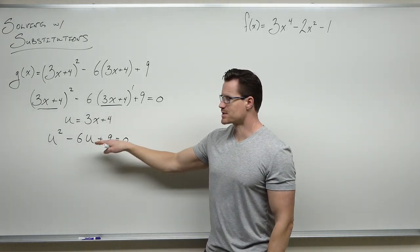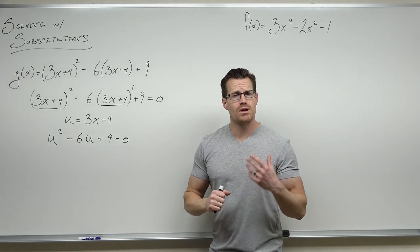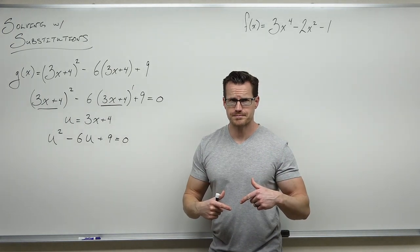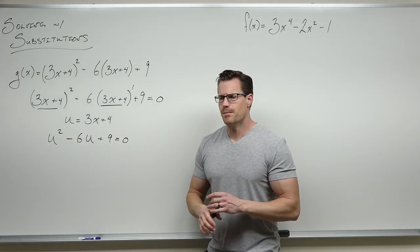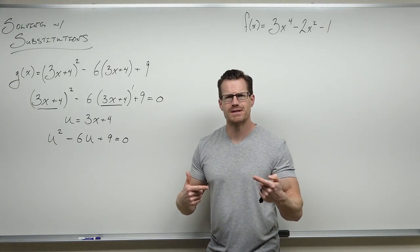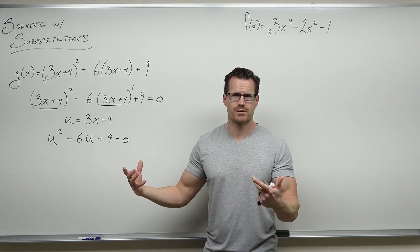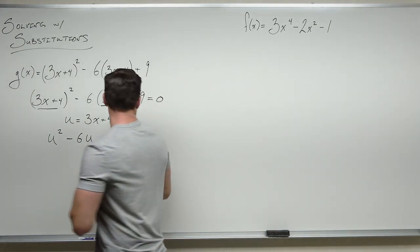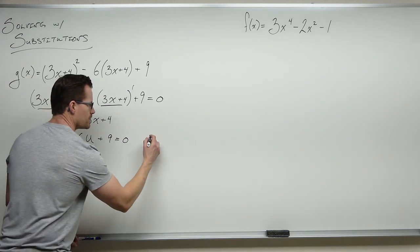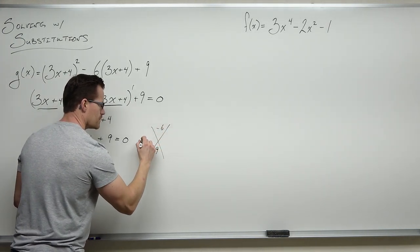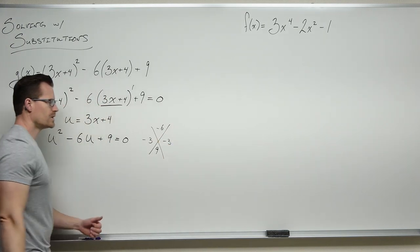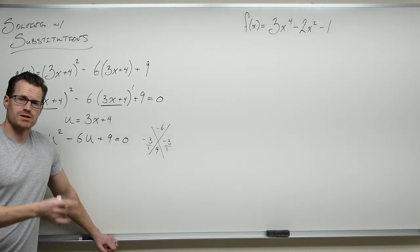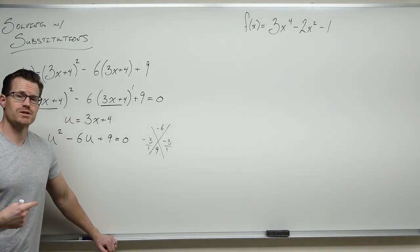Like 99% of the time, the resulting quadratic is going to be factorable. If it's not factorable, it's quite hard to deal with because you'll use the quadratic formula or the square root method, and if we have radicals in there it's very difficult to get back to our original variables. Most of them are factorable. This one is, and we know we can use the shortcut to get two factors that are actually exactly the same.